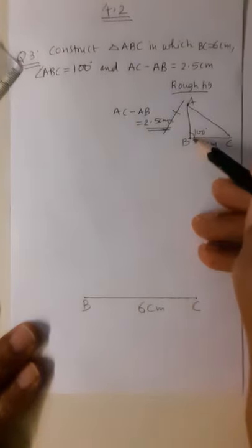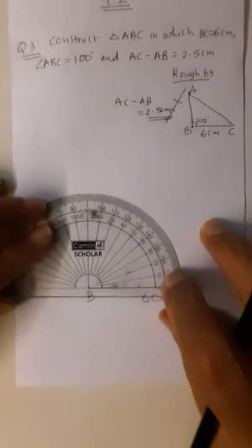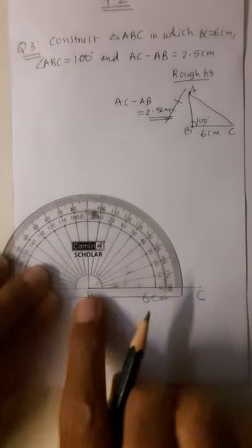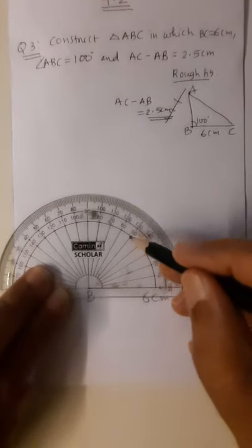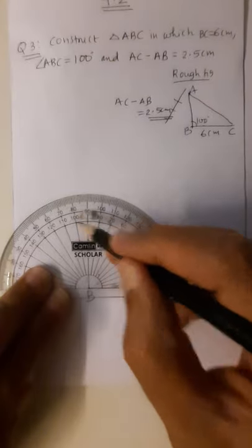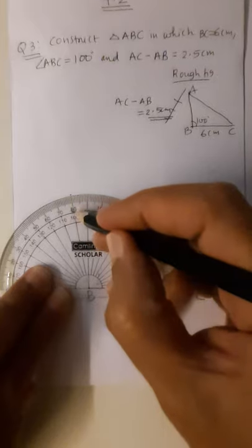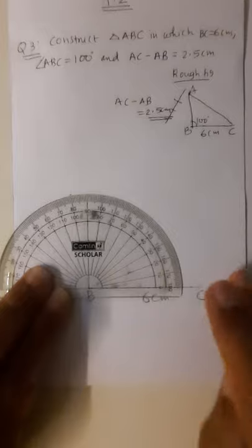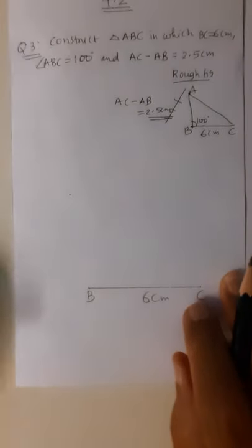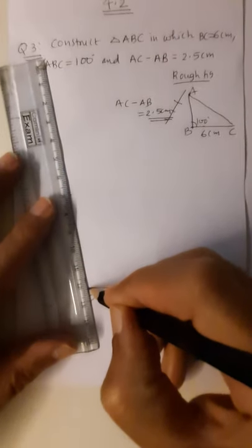Now angle B is 100 degrees — it is an obtuse angle, more than 90 degrees. I have kept the protractor here. The ray BC goes to this side, so I count 0, 10, 20, 30, 40, 50, 60, 70, 80, 90, and then 100. This is the 100-degree angle. After marking 100 degrees, I draw this ray and extend it also.